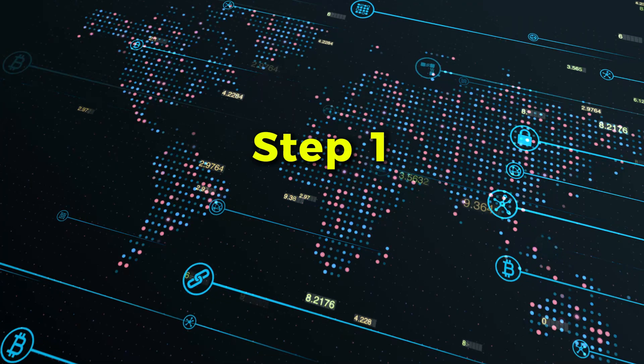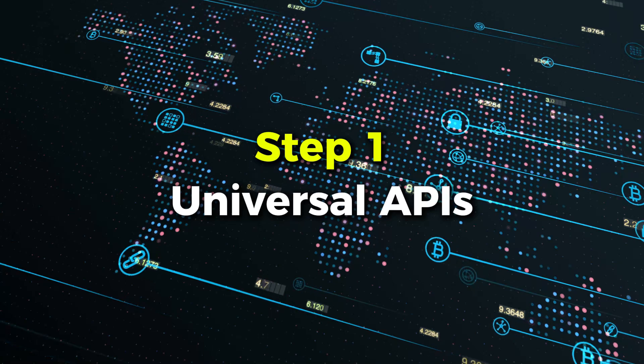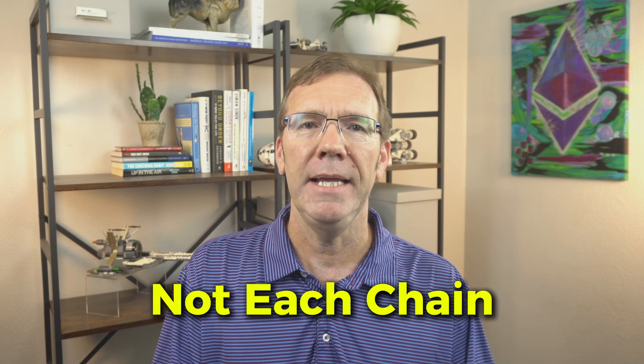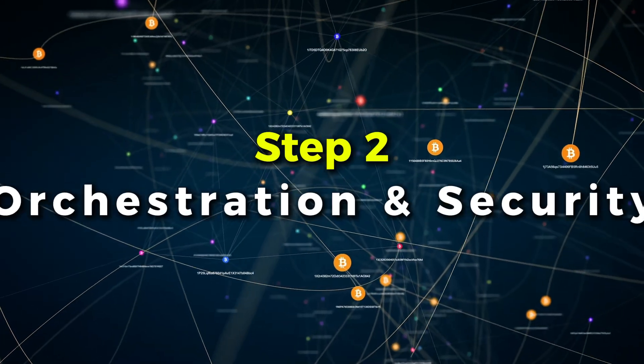Step one — keep the developer experience simple by using universal APIs. Your app calls Overledger, not each chain. Overledger translates your intent — whether that's minting a token, moving value, or querying state — into the right dialect for each network.